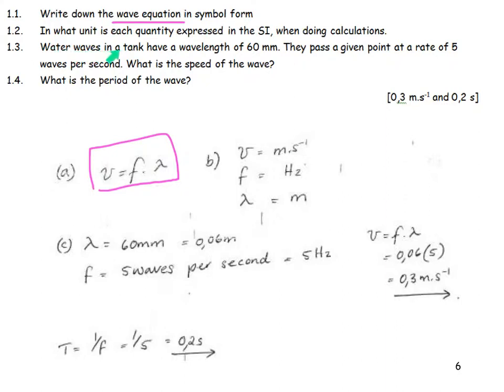Water waves in a tank have a wavelength of 60 millimeters. I need to convert that into meters by dividing by 1,000. Good thing we just revised all of our units. They pass a given point at a rate of 5 waves per second. Number of vibrations per second. Frequency is 5 hertz. What is the speed of that wave? V equals lambda F. I take the wavelength, I multiply it by the frequency, and I get my answer. What was the period of that wave? 1 over the frequency, which is 0.2 seconds.